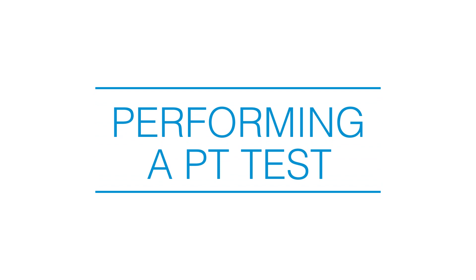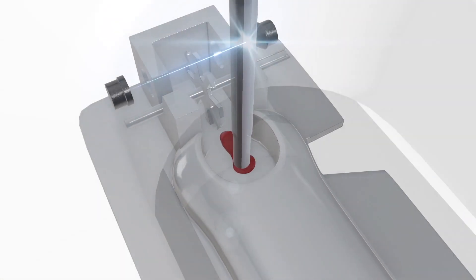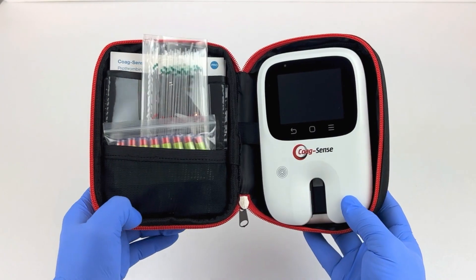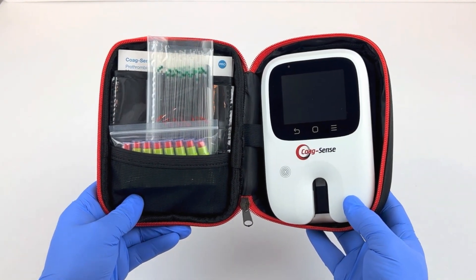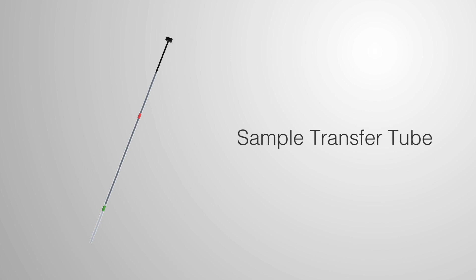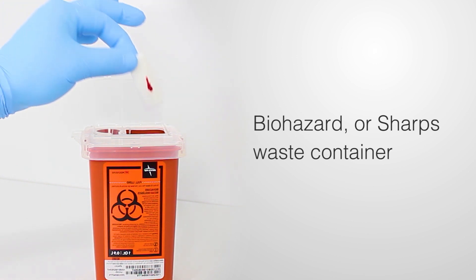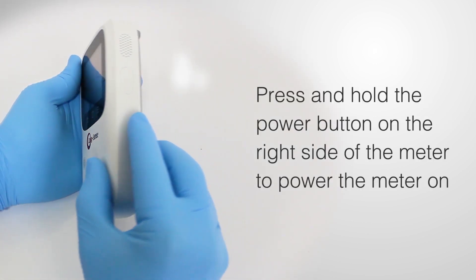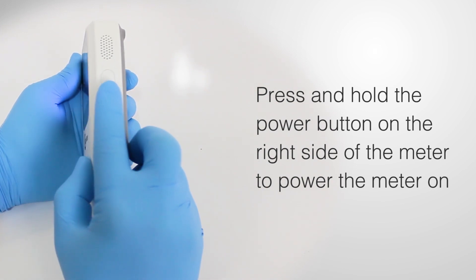This video provides a brief overview of how to perform a PT INR Test. Make sure that you have all the supplies needed before you start, including a 21-gauge lancet, sample transfer tubes, sterile alcohol prep pads, gauze square, and a biohazard or sharps waste container.